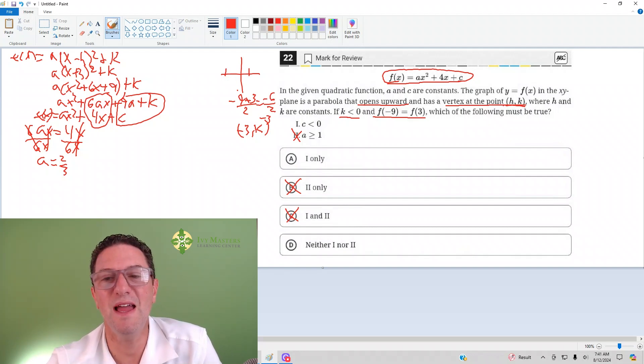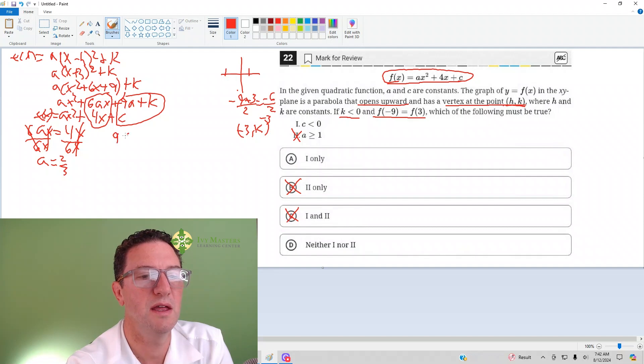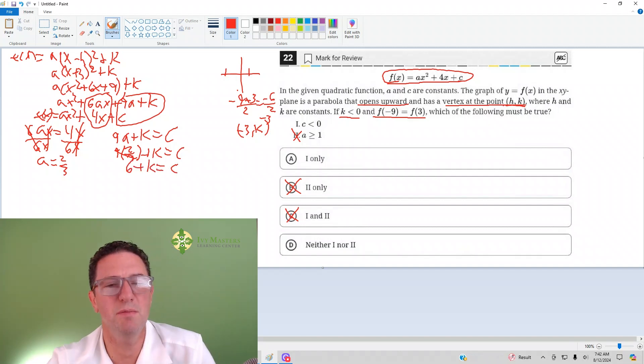Now how are we going to finish this? We need to know if c is less than zero. Notice I also had 9a + k = c, and now we know that a = 2/3. So if I do 9 times 2/3 plus k equals c, this would be six plus k equals c.